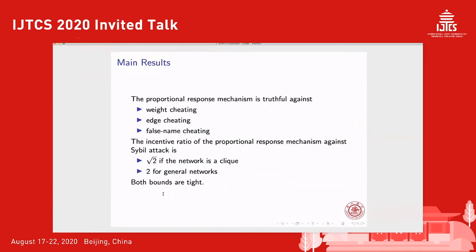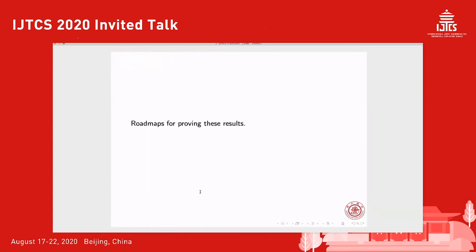Here are our results for this resource sharing network. The proportional response is truthful against the first three kinds of cheating strategies: weight cheating, edge cheating, and false name cheating. Actually, the cyber attack will help the agent to improve his utility, but the incentive ratio of this cyber attack is bounded by a constant. The incentive ratio is square root of two if the underlying network is a complete graph, and two for general networks. Both these bounds for the incentive ratio are tight.